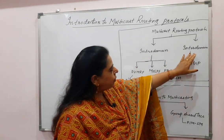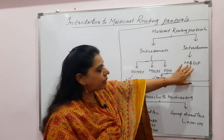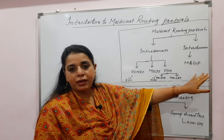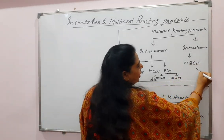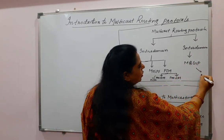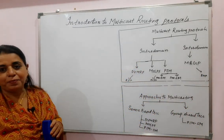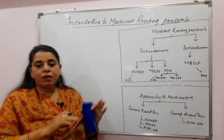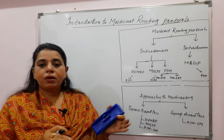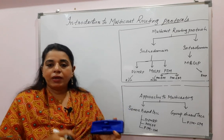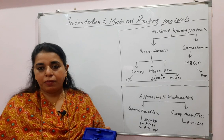The next category in multicast is inter-domain, and the protocol is Multicast Border Gateway Protocol (MBGP). It is an extension of the Border Gateway Protocol from unicast routing. So when it comes to routing, you have to take care of not only unicast but also multicast routing protocols.